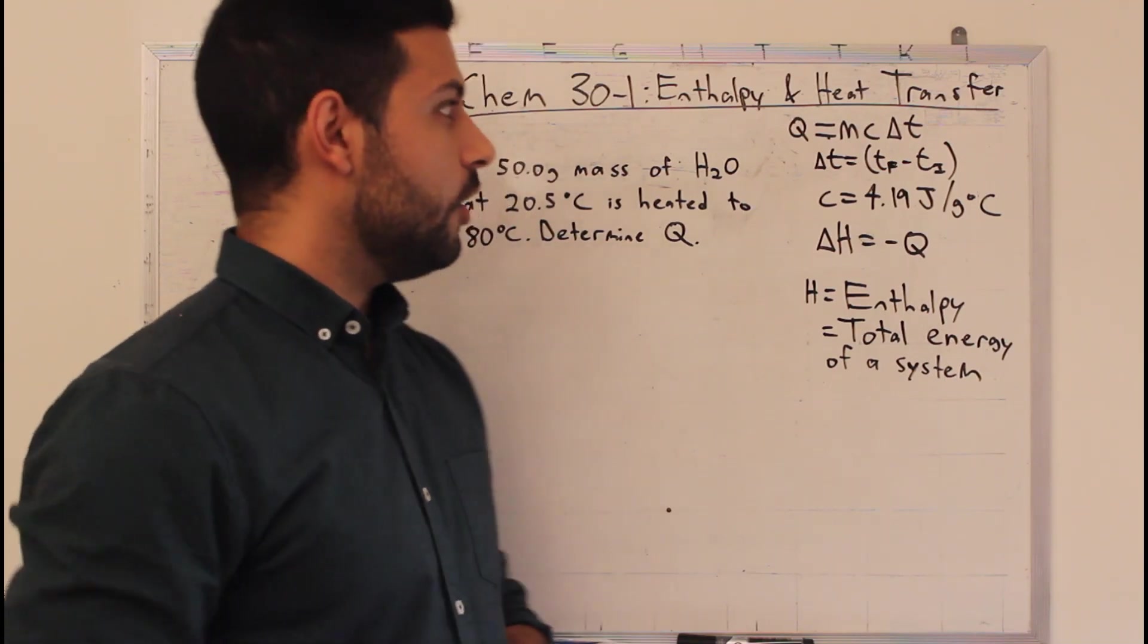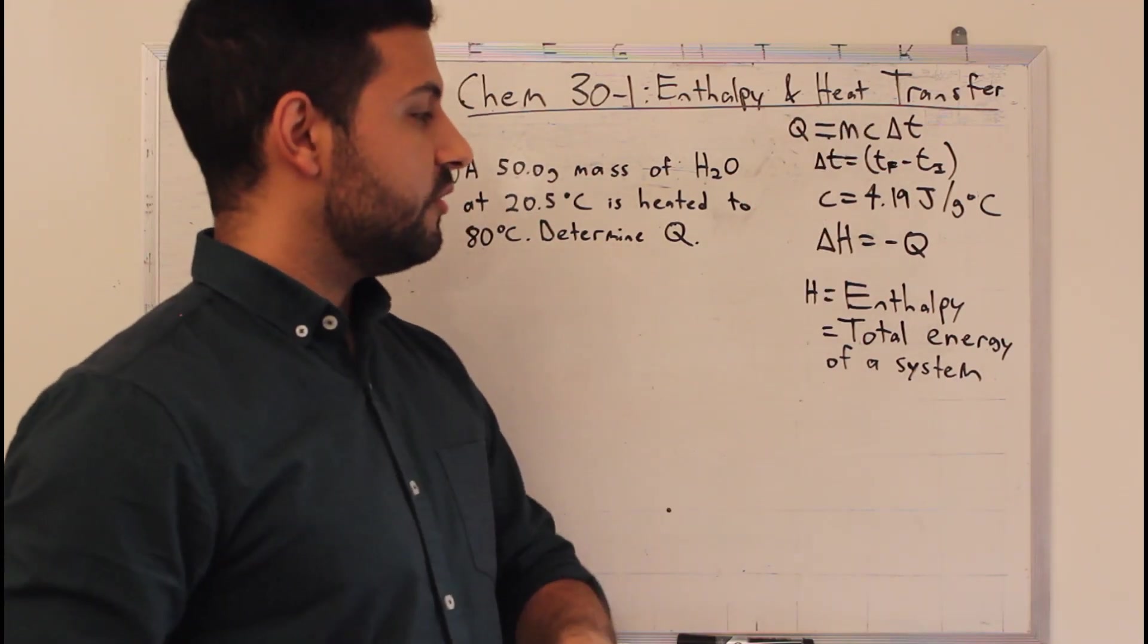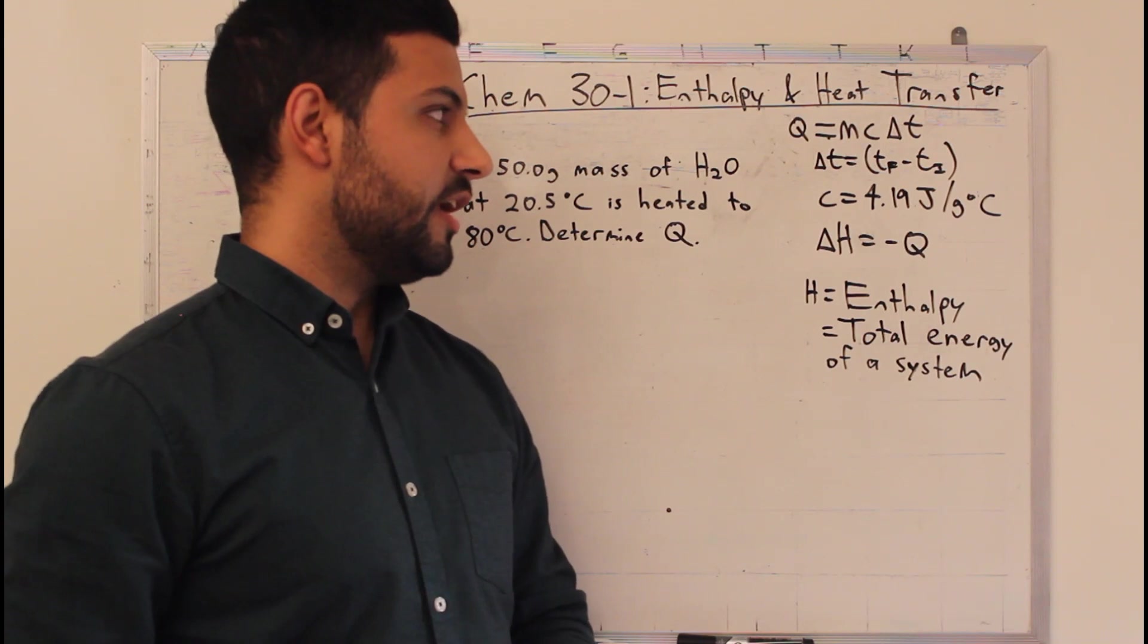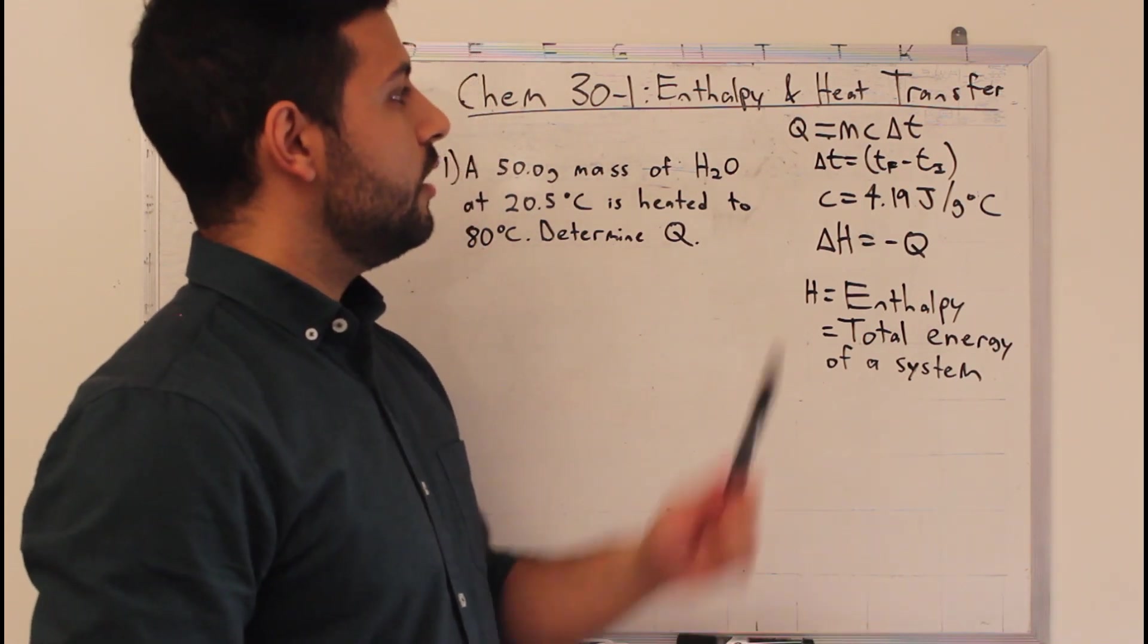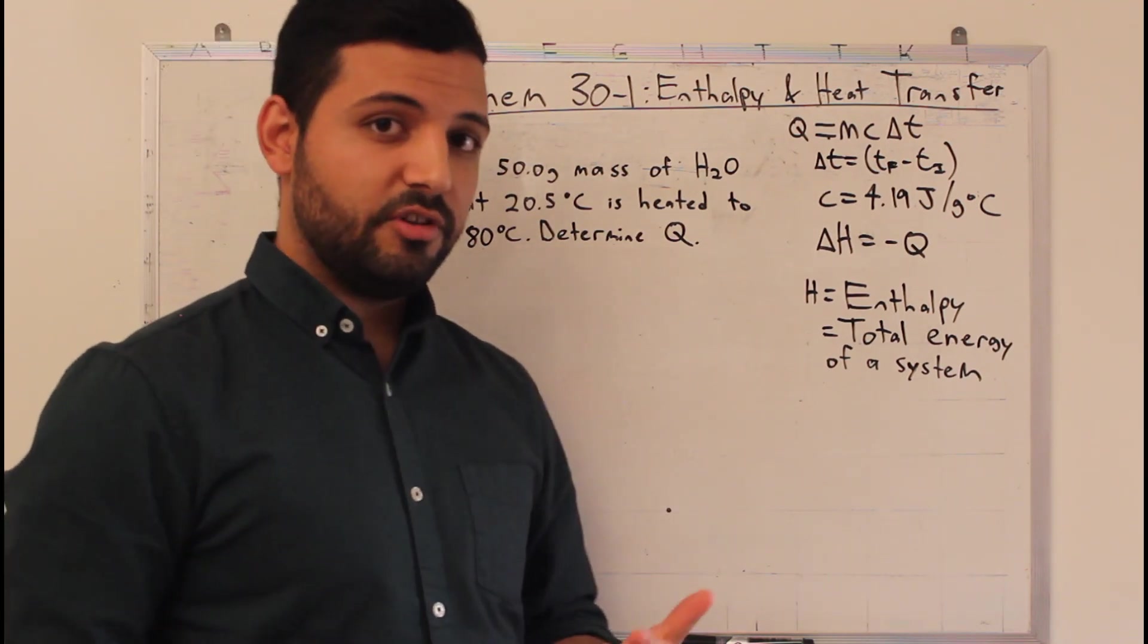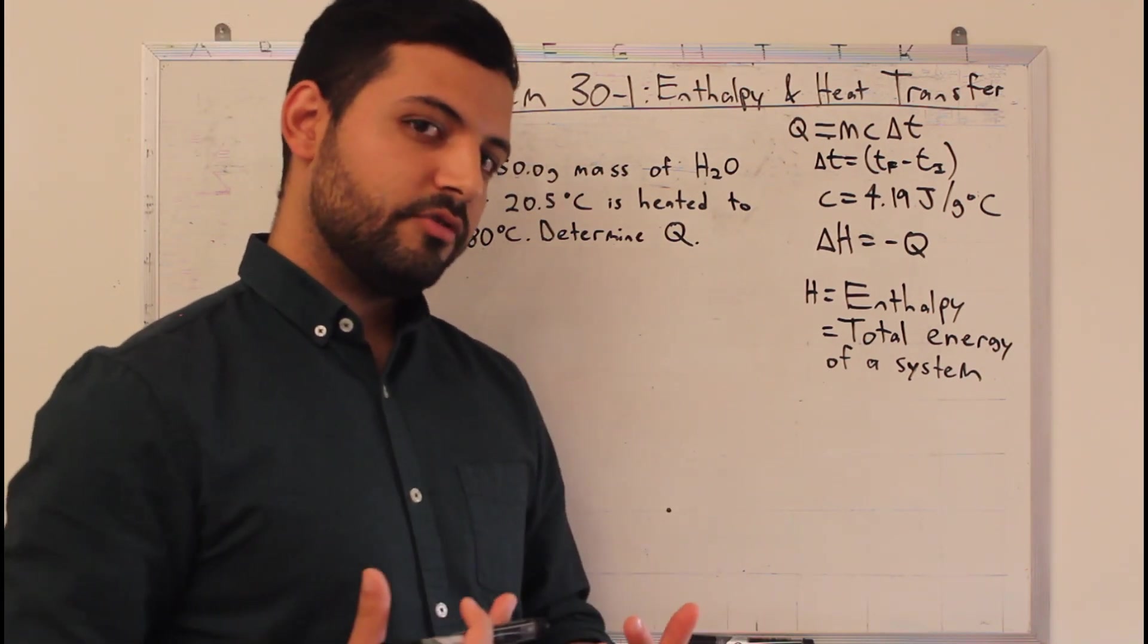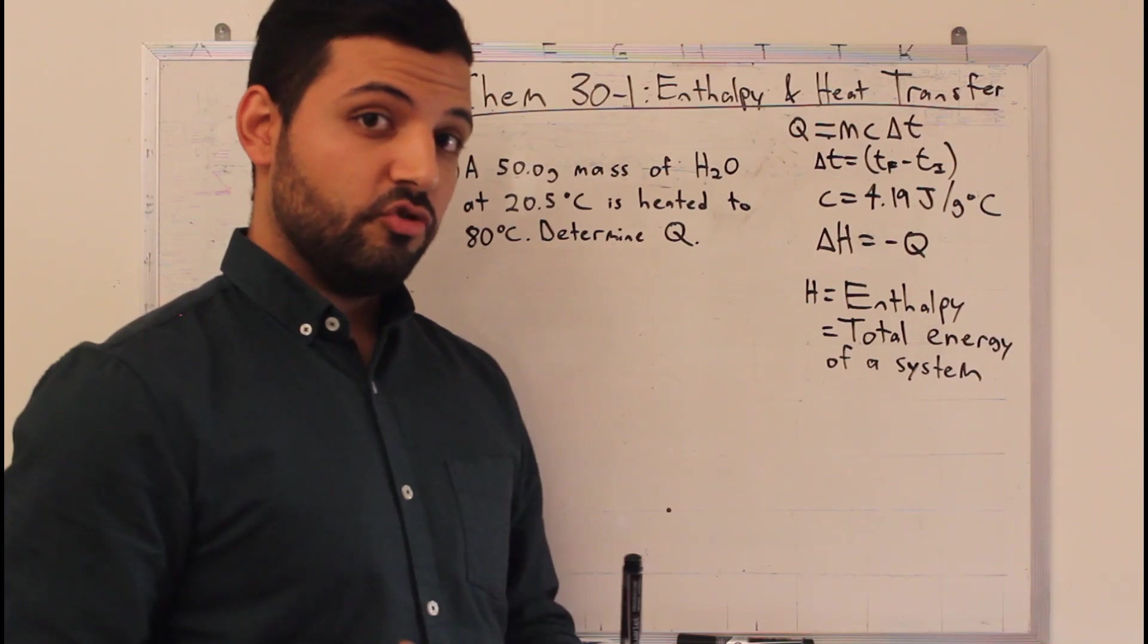Two important equations you need to know: Q equals MC delta T, and delta H equals negative Q. These may be a little confusing to you at first, but I'll show you what they mean. Q is the energy that a chemical system either releases or absorbs, and is typically measured in joules.